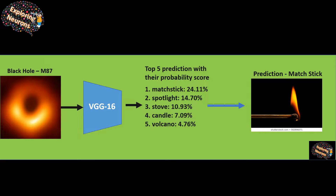This is not a perfect approach since the black hole image was formed by integrating and interpreting different space signals, but let's see what the algorithm interprets just from the image. I used a famous network called VGG16, and the top five predictions were: matchstick 24%, spotlight 14%, volcano 10%, candle 7%, and volcano 4%. It makes sense — the image looks like a very bright yellow flame, so the algorithm says it looks like a burning matchstick or a spotlight.